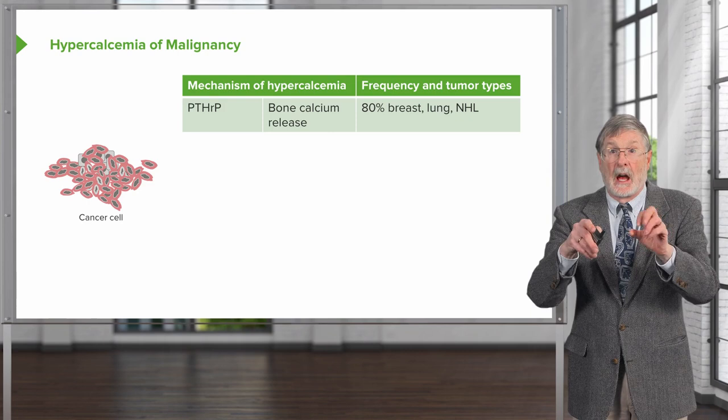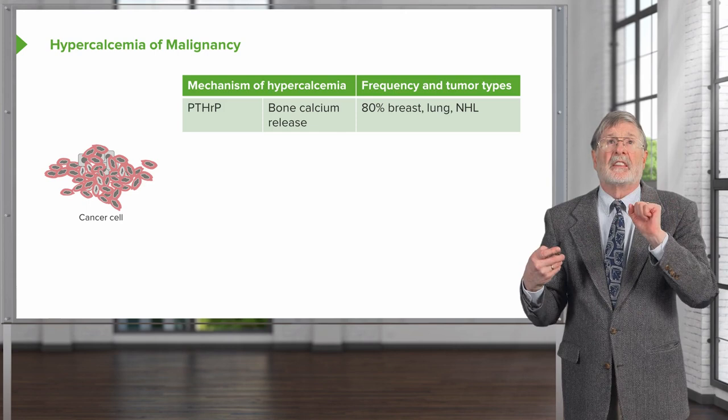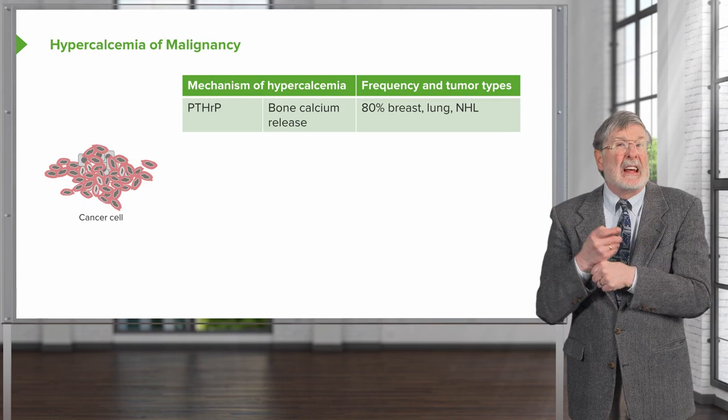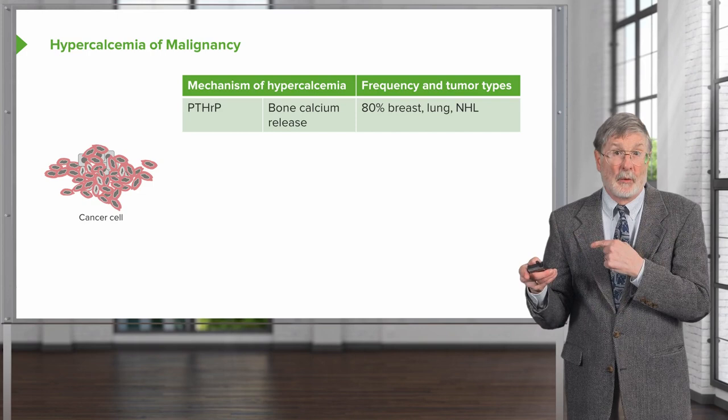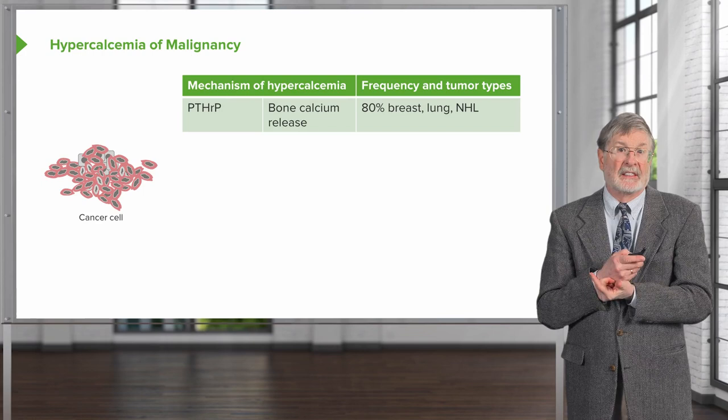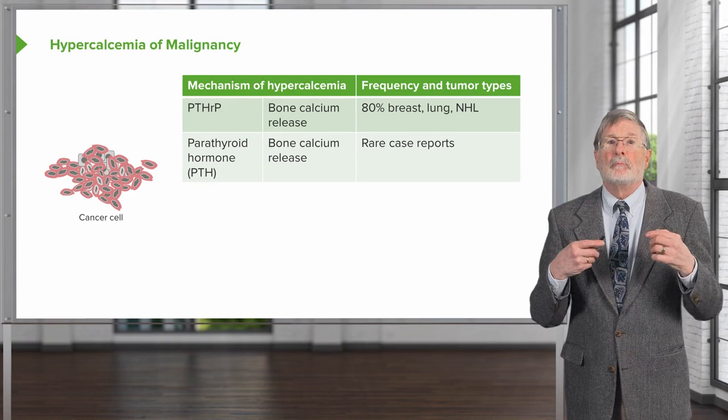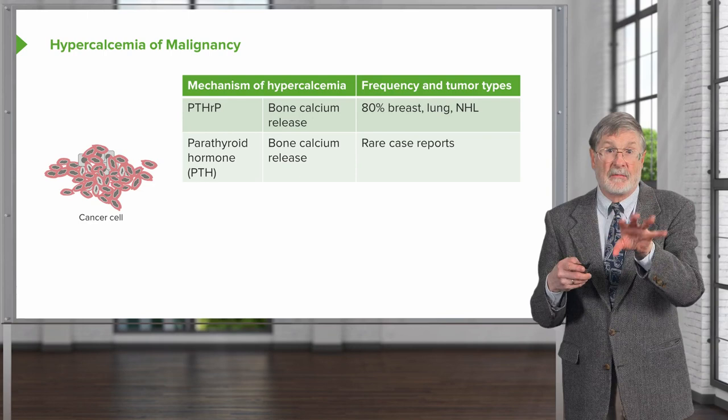In tabular form, overall 10% of malignancies will have hypercalcemia. In about 80% of breast cancers, lung cancers, and non-Hodgkin lymphomas, there will be elevated PTHrP causing the bone calcium release just discussed. There are also rare case reports of tumors actually making true parathyroid hormone, which acts through the same general mechanisms to cause calcium release.